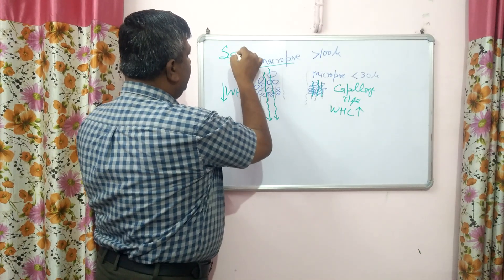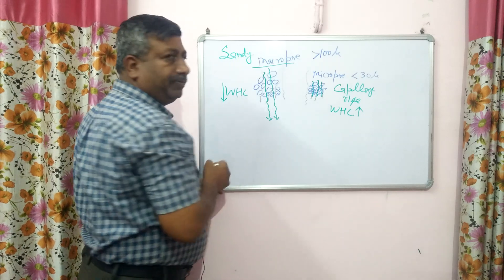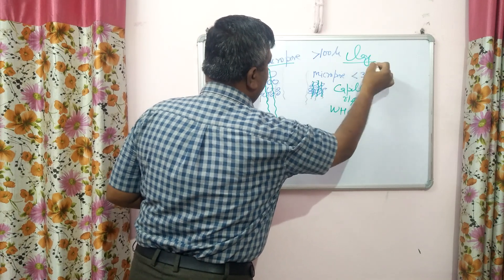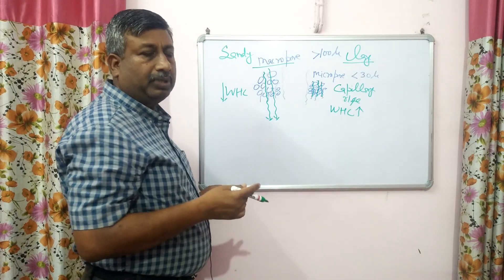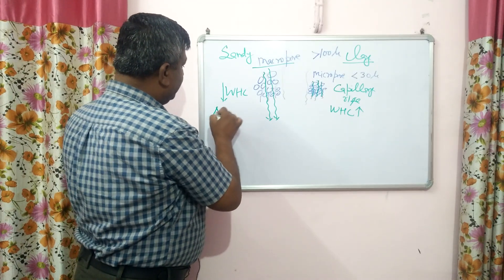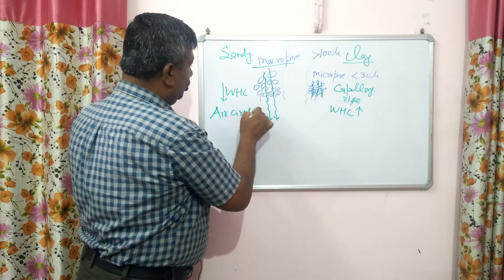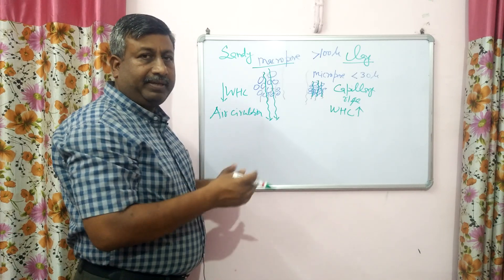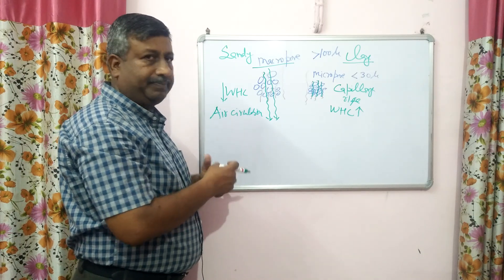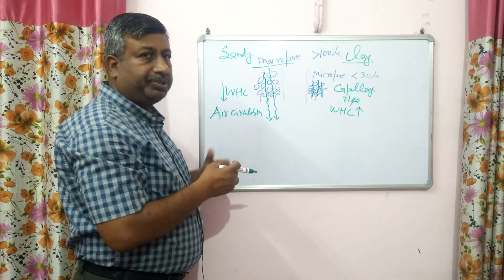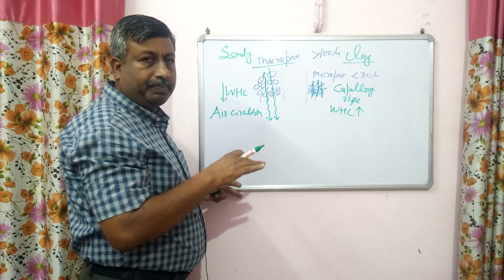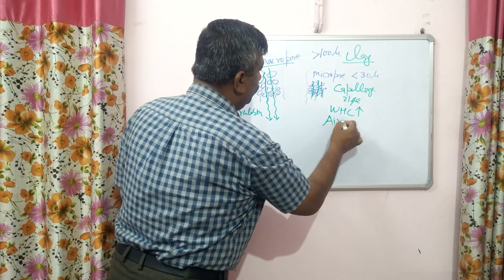If soil has more micropores, there will be more capillary rise and more capillary water retention, so water holding capacity will be more in such soil. Macropores are more in sandy type of soil where sand proportion is more, while micropores are more in clay-rich soil. In macropore soil, air circulation is very good because pores become empty very soon after irrigation or rainfall, so air is retained in the pore space. But in clay soil, water occupies the pore space, which is why air circulation is poor.